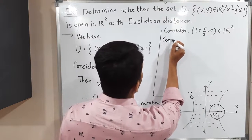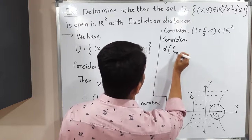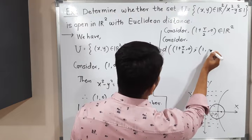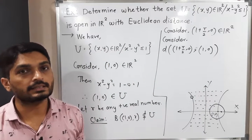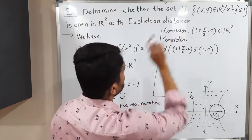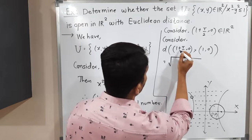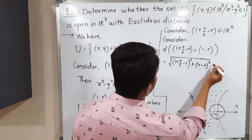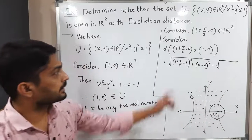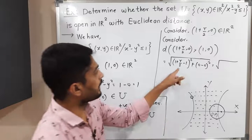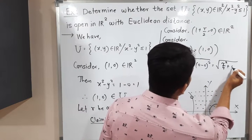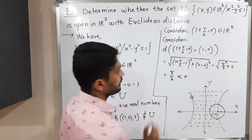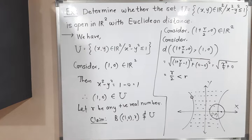Let us find the distance from (1 + R/2, 0) to the center (1, 0) using the Euclidean distance formula. That is √[(1 + R/2 - 1)² + (0 - 0)²] = √[(R/2)² + 0] = √[R²/4] = R/2. Since R/2 < R, the distance from this point to the center is less than the radius R.